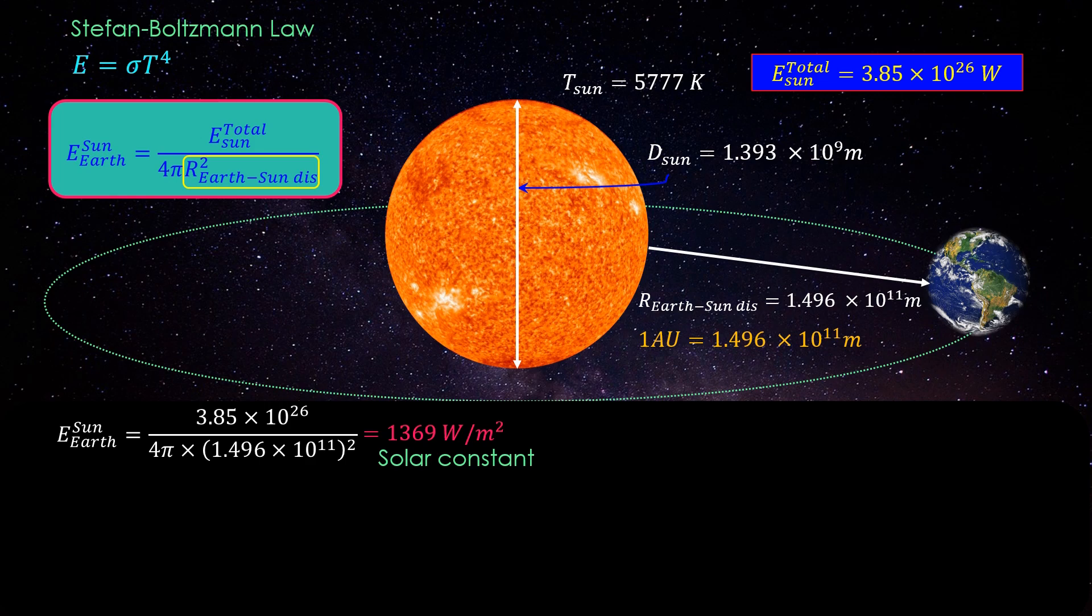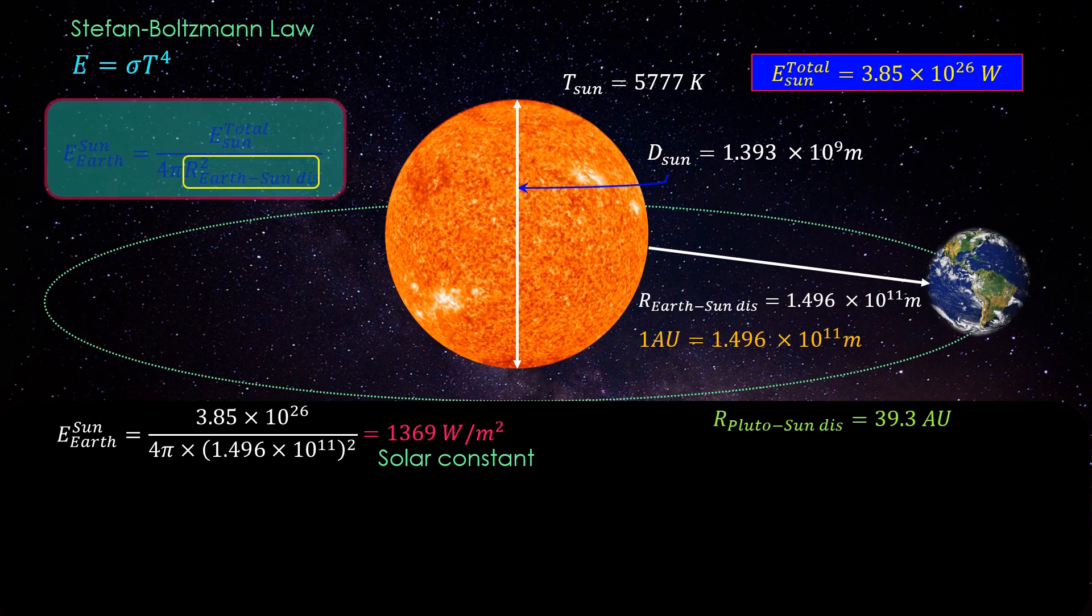Now let's calculate the solar flux reaching Pluto. The distance between sun and Pluto is 39.3 astronomical units. If we keep the constant terms of the equation on the right hand side,